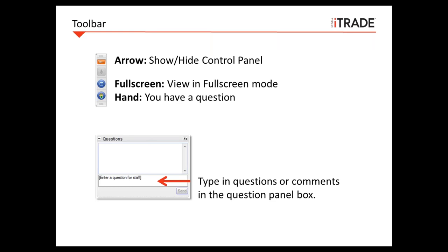Let's quickly review the toolbar feature. At the very top you've got the orange arrow, which can be used to show or hide the control panel. If the GoToWebinar toolbar disappears, use the orange arrow to make it reappear. You can also view this presentation in full screen mode by clicking on the computer icon on the toolbar. If you have a question, use the hand icon, but we prefer you type it into the question panel box — I'll be monitoring those actively and route them to our presenter.